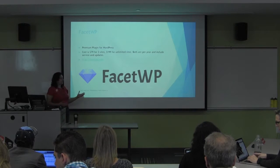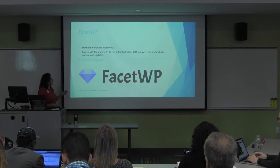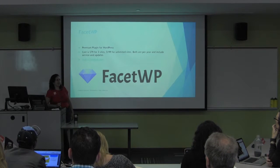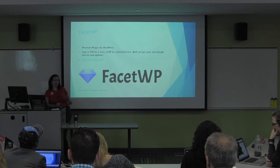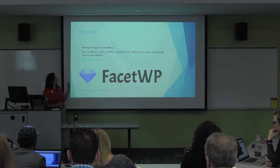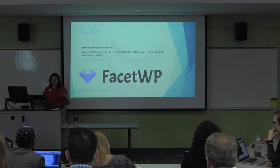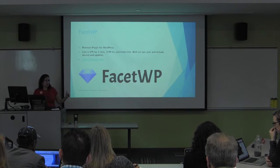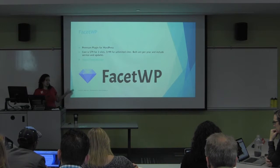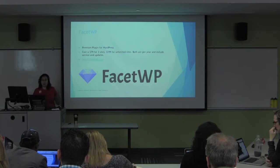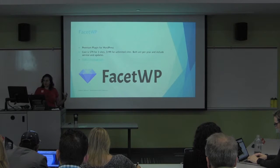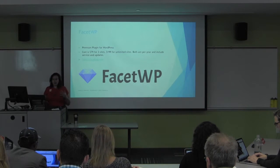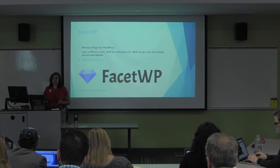So that brings us to why we're here: FacetWP. FacetWP is a premium plugin for WordPress. It's $79 for three sites at the time of writing, $199 for unlimited sites — both are per year and include service and updates. You can find it at facetwp.com. I've learned a lot by building this presentation, and I'm going to lead you through some of the hurdles I went through. You can download a 30-day trial, but unless you get into it and actually play around with it, you lose that chance. So I've spent the money for you.